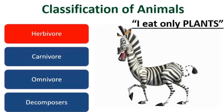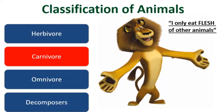Herbivores are those animals that eat only plants and plant products, like a cow, deer, and a zebra. The next is a carnivore. Carnivores are those animals that eat only flesh of other animals, like a lion, tiger, and some birds like vultures.